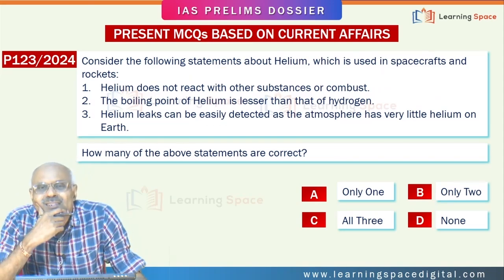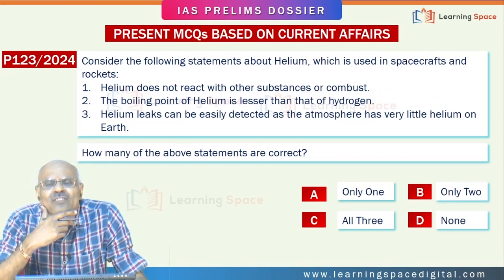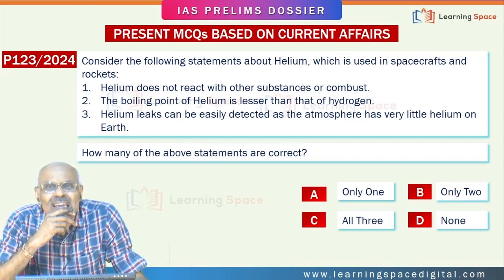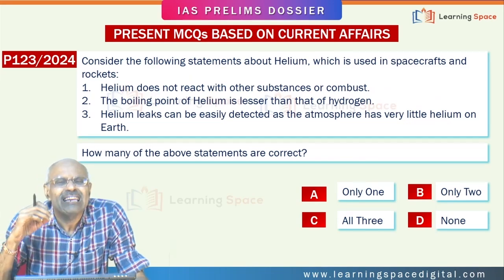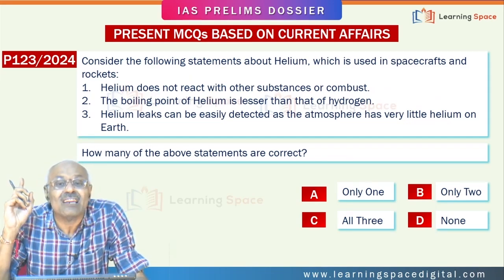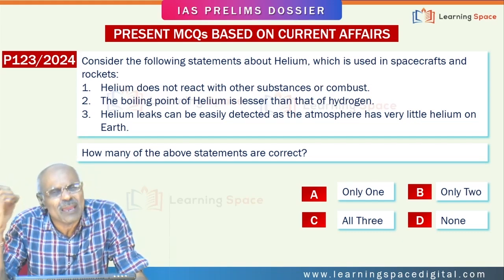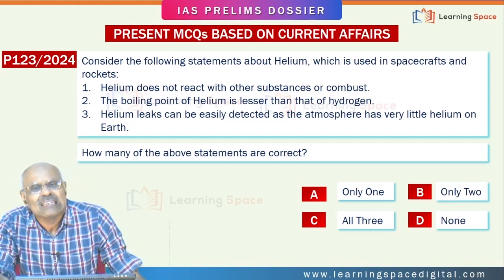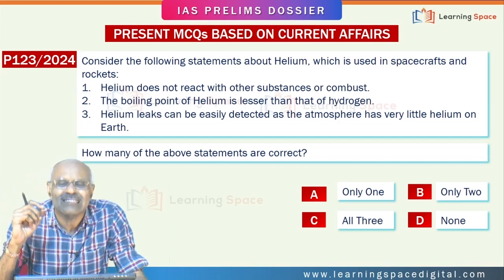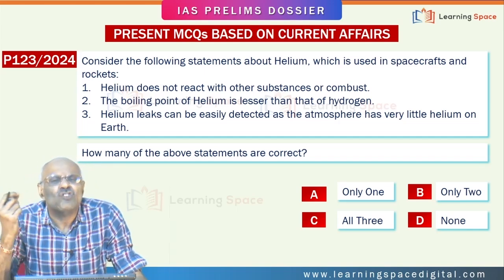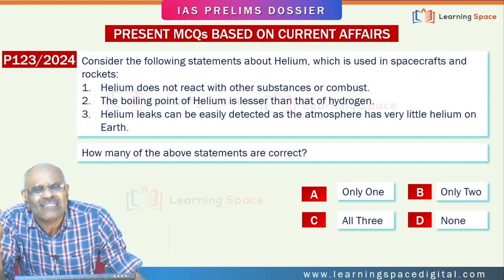Helium. Because of helium leaks in recent times, the Starliner could not bring astronauts from the International Space Station — it came empty. Similarly, because of helium leaks, the launch of the SpaceX Falcon 9 rocket was also delayed.